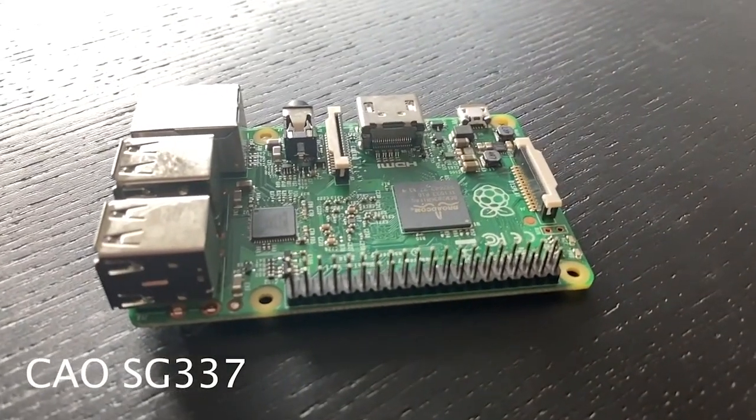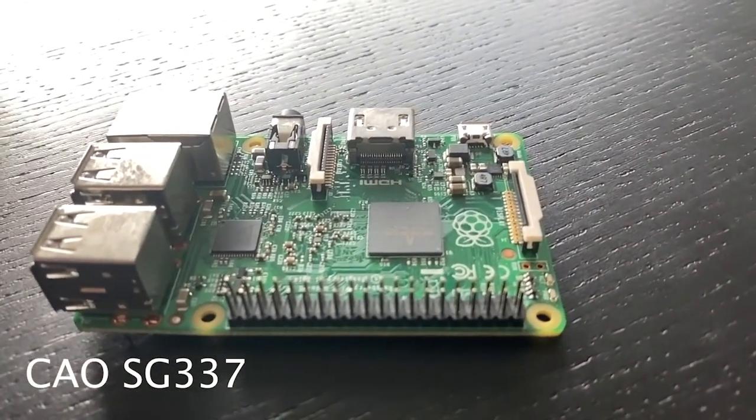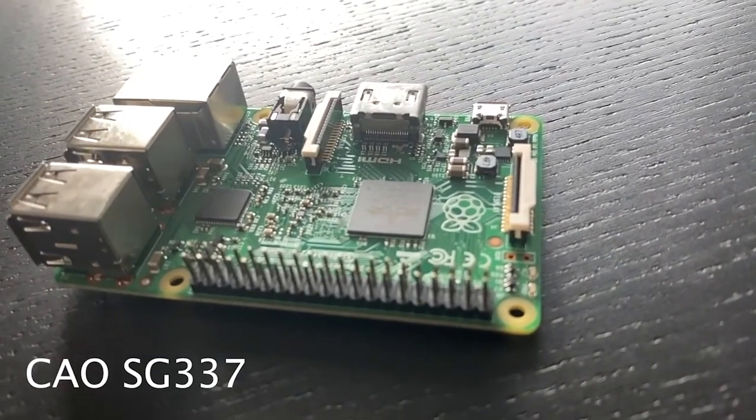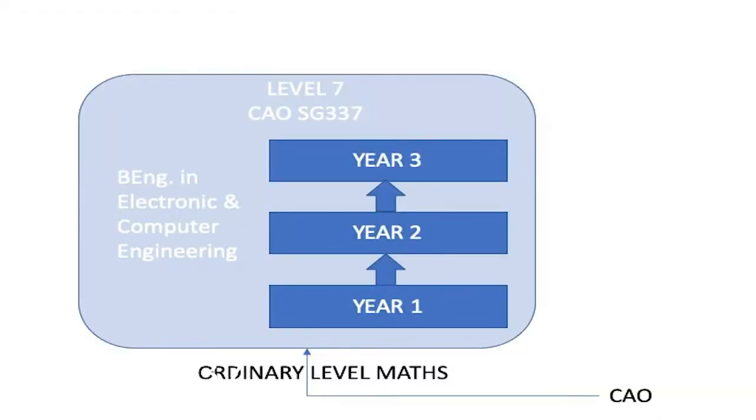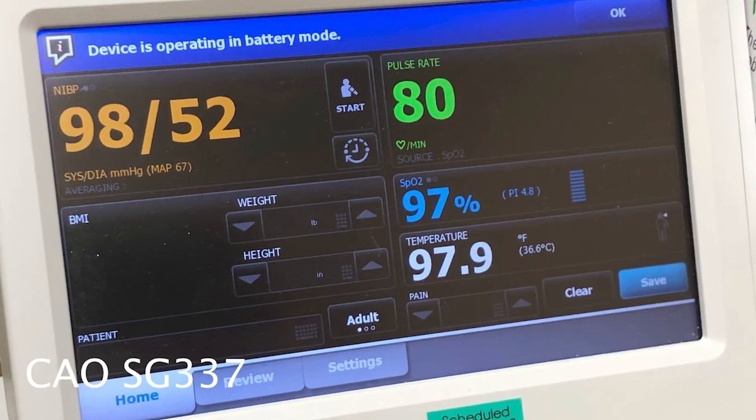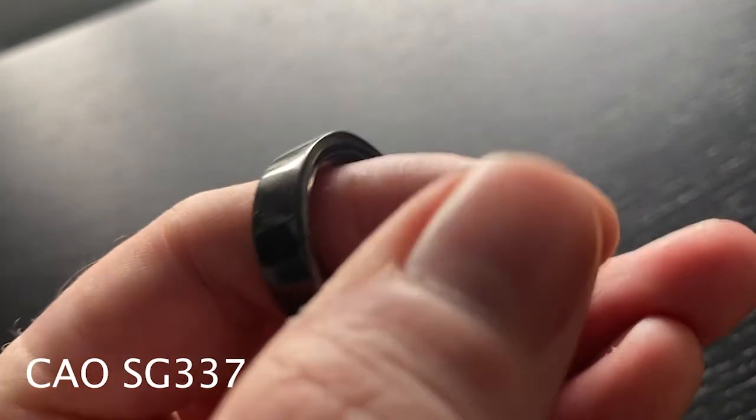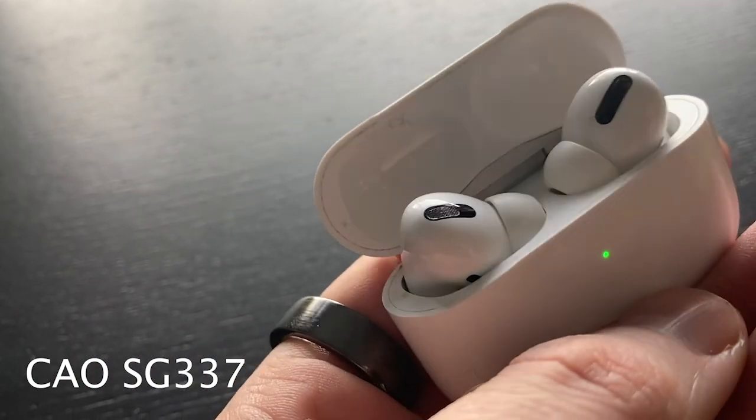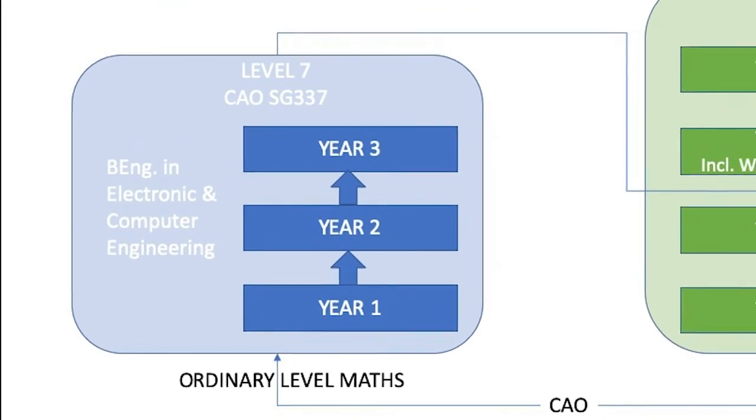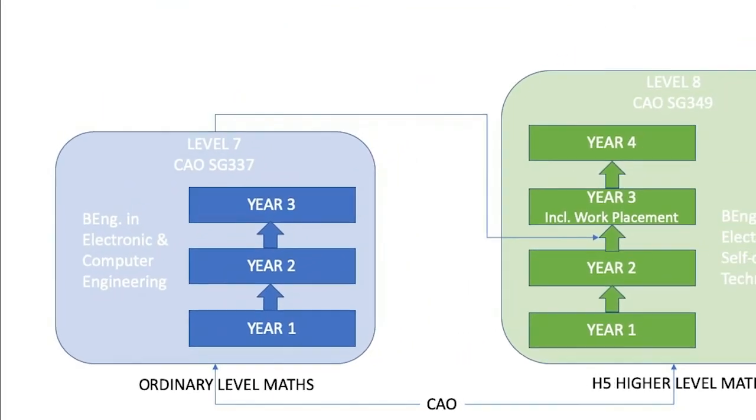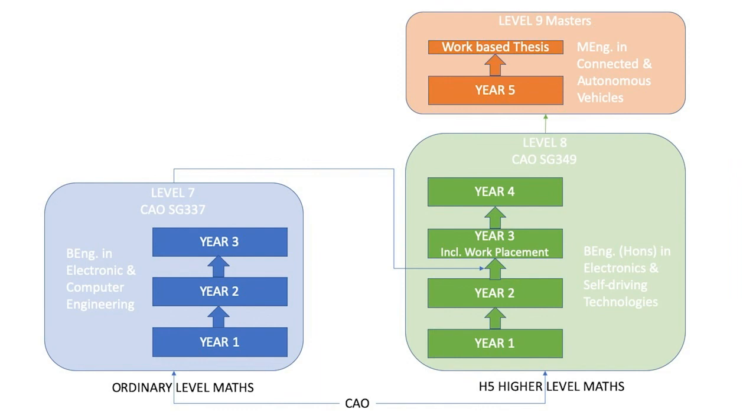If you are interested in technology or engineering, but are not doing higher level maths, why not consider our level 7 in electronic and computer engineering? This is a three-year program that looks at the design and development of embedded electronic systems. These are the medical devices that keep us healthy, the consumer devices that keep us entertained, or the control systems that keep us safe on the road. You can then progress onto the level 8 in electronics and self-driving technologies and from there to the masters. Check out the link below for more information.